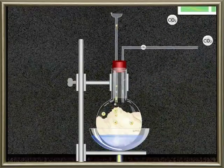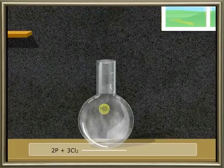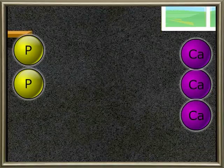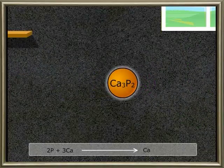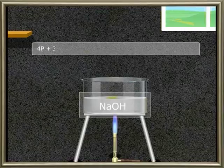Phosphorus reacts with chlorine to form phosphorus trichloride and then it forms phosphorus pentachloride. On combining phosphorus with calcium, calcium phosphides are formed.